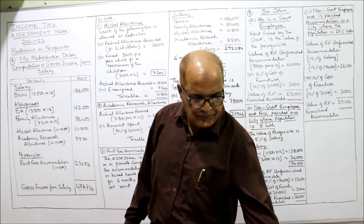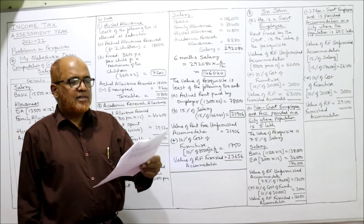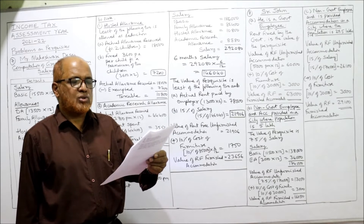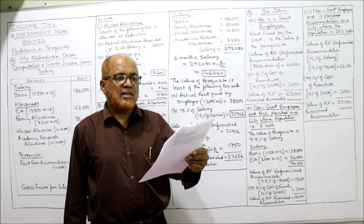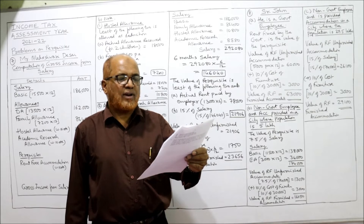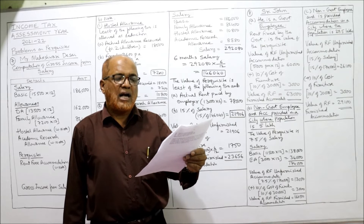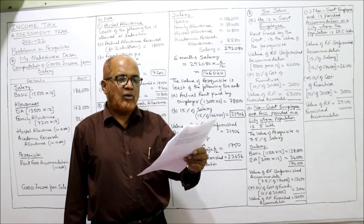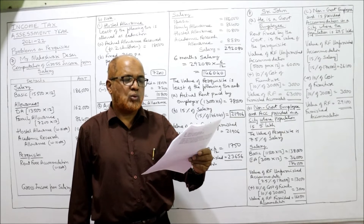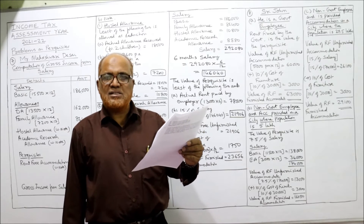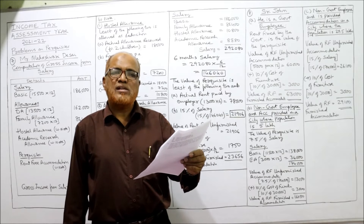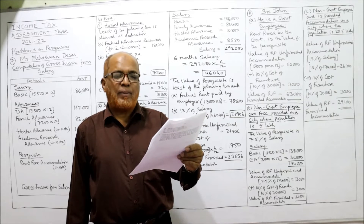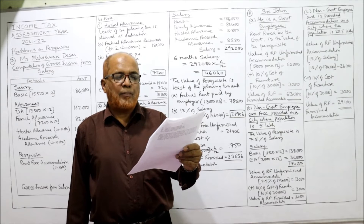Problem 8: Sri John's salary particulars per month — basic pay 11,500, DA 8,000, entertainment allowance 3,000. He is provided with rent-free accommodation; cost of furniture provided is 30,000. Municipal rental value is 6,000 per month, actual rental value is 7,500 per month, government rental value is 5,000 per month. We must calculate the value of rent-free accommodation in three separate situations.